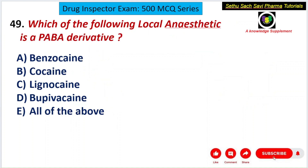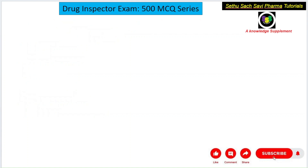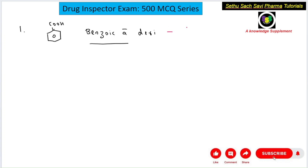Next question: which of the following local anesthetics is a PABA (para-aminobenzoic acid) derivative? A) Benzocaine, B) Cocaine, C) Lignocaine, D) Bupivacaine, E) All of the above. Local anesthetics can be classified by structure. The first class contains the benzoic acid moiety — a benzene ring with a carboxylic acid — and examples include cocaine.